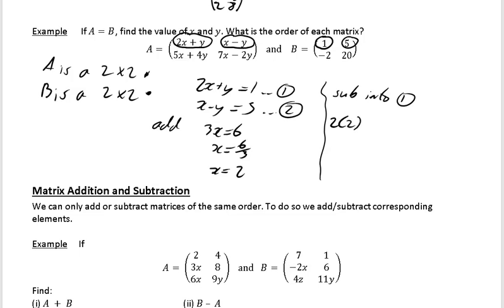So instead of writing x, I'm going to write 2. So it was 2 times 2 plus y is equal to 1, which is 4 plus y is equal to 1, which means y is equal to 1 minus 4, y is equal to minus 3. So my answer is x is equal to 2, y is equal to minus 3.